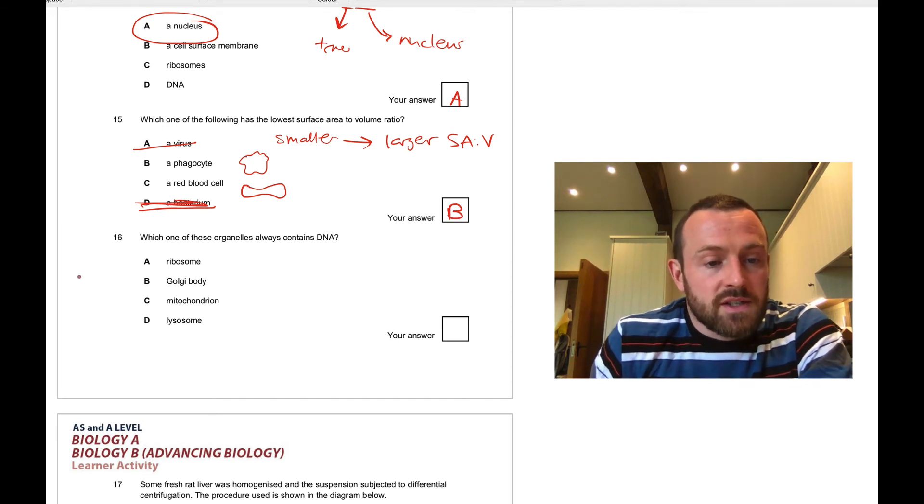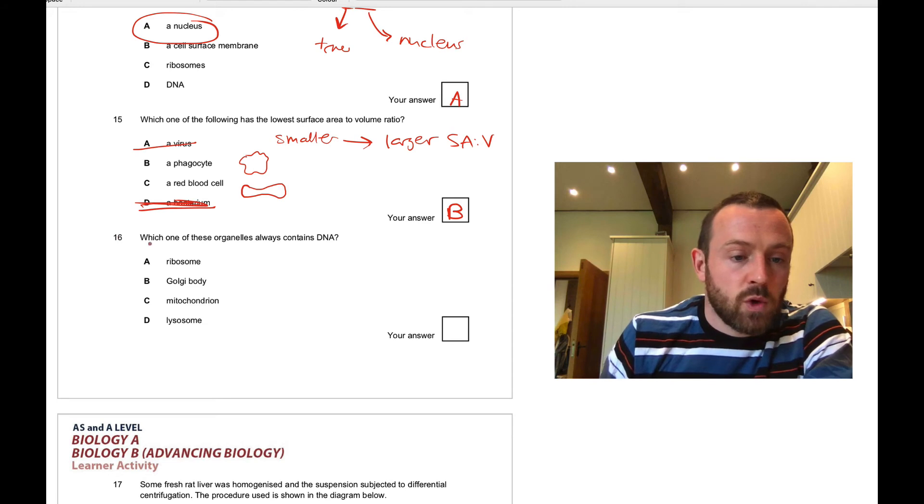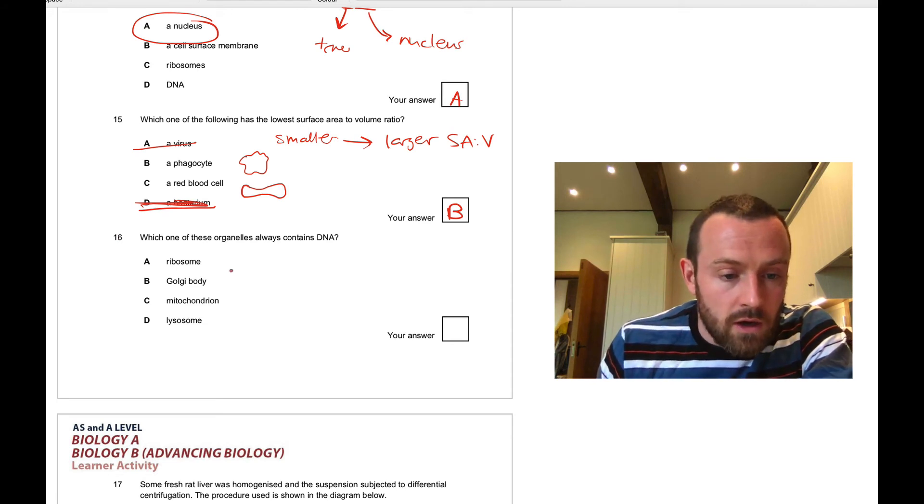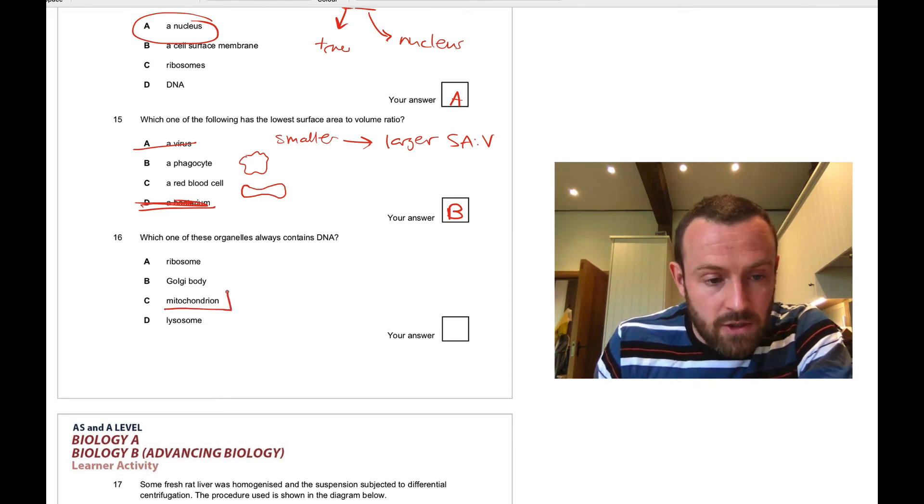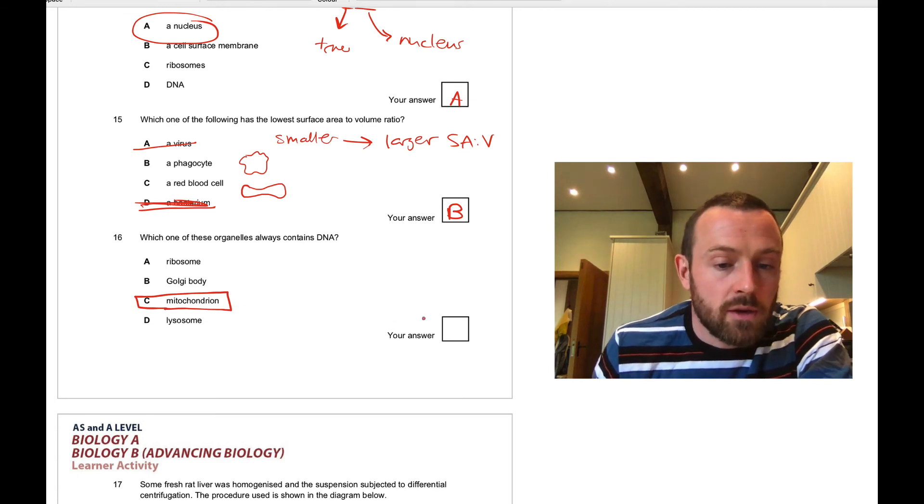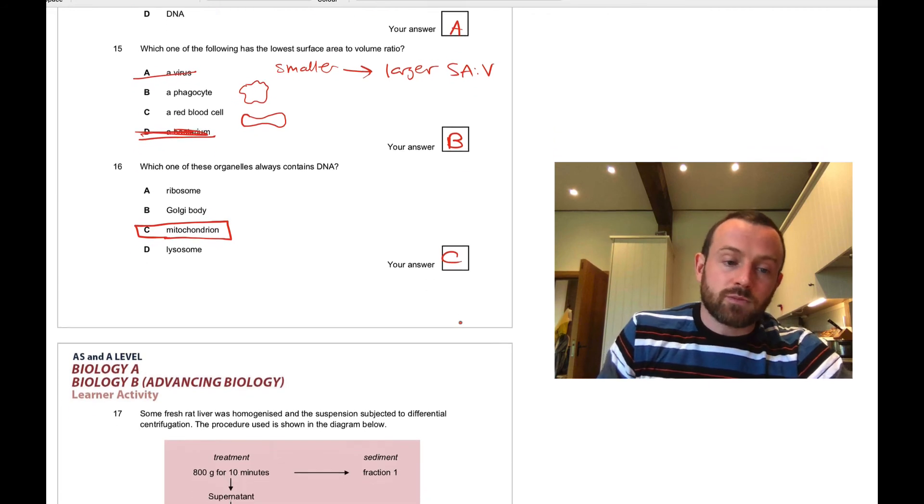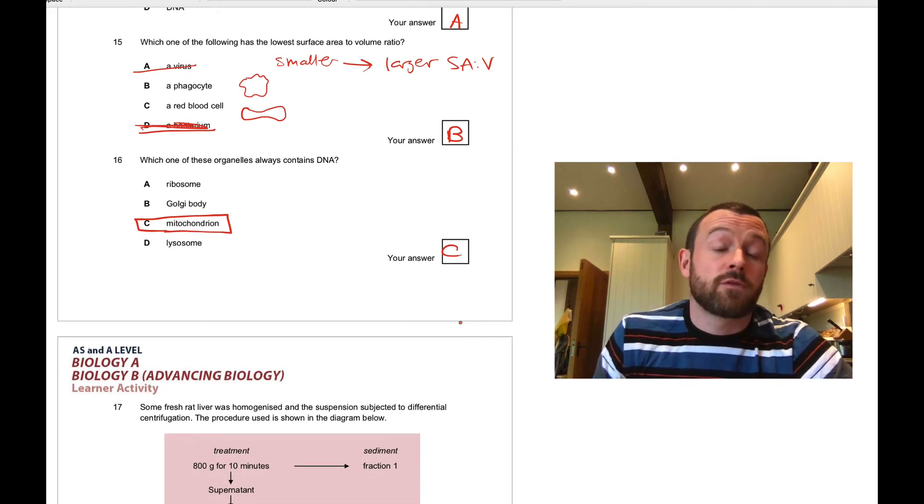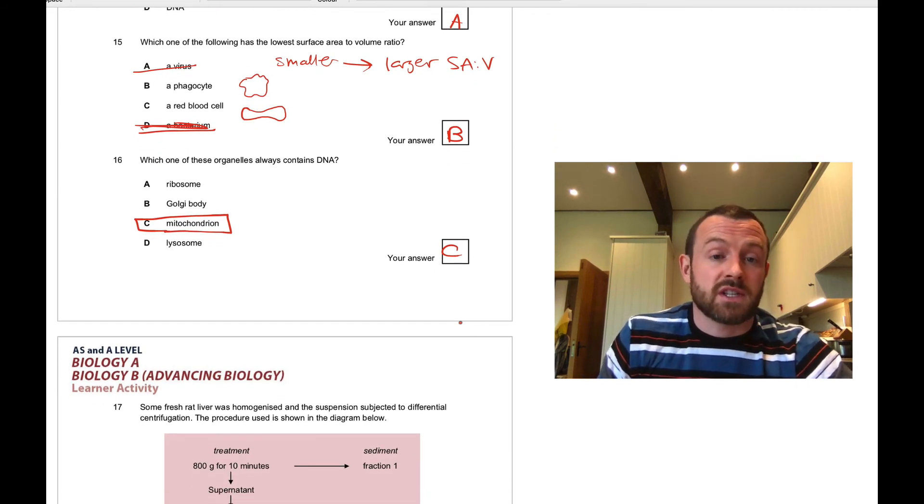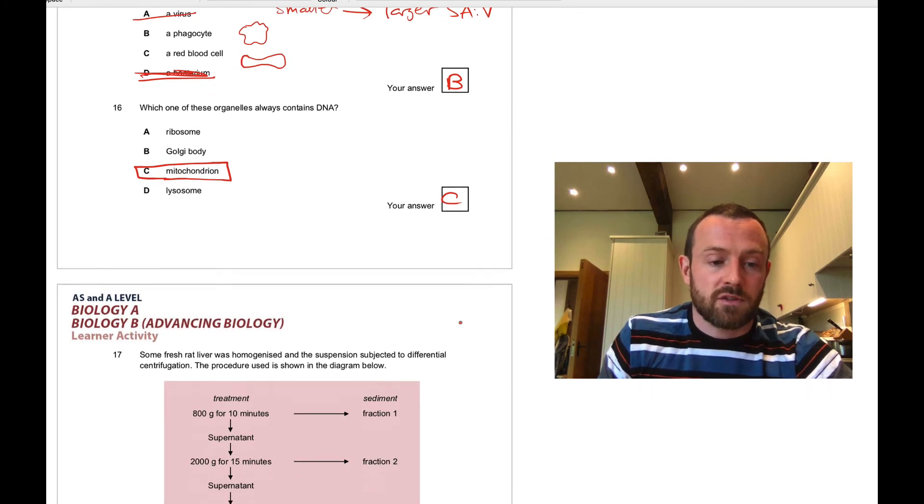Question sixteen: which one of these organelles contains DNA? It's the mitochondrion. Remember we talked about the endosymbiotic theory already a few times. Mitochondria have their own DNA always, and they code for some genes that are involved in the process of aerobic respiration. That's the function of mitochondria.